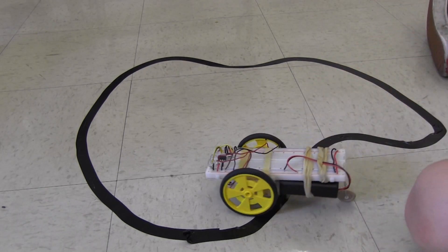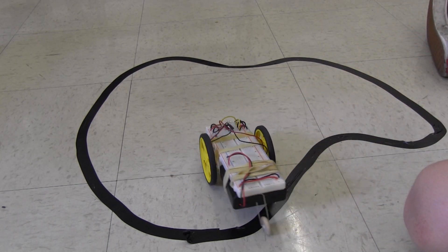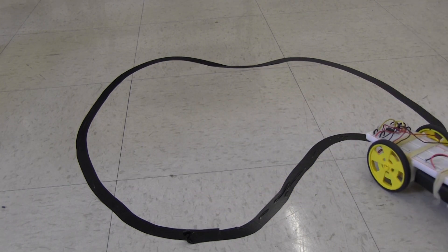To follow the line, the robot uses sensors to detect the reflection of infrared light. But whether or not these sensors work correctly depends on the sensitivity set by the potentiometer.